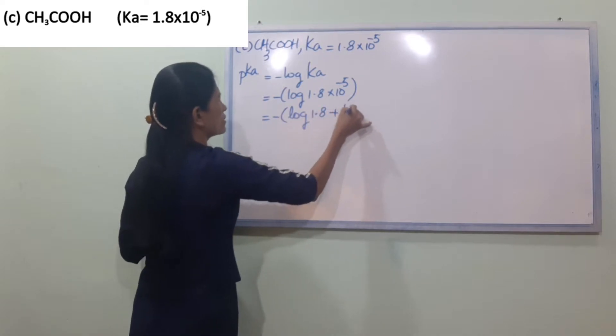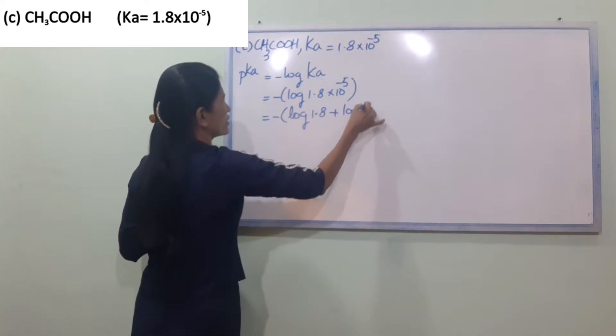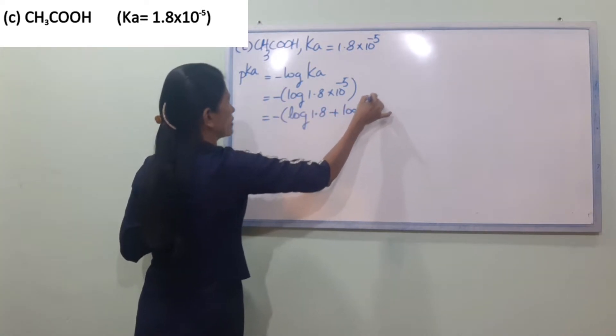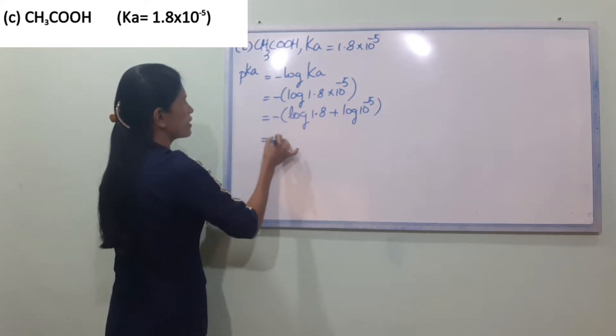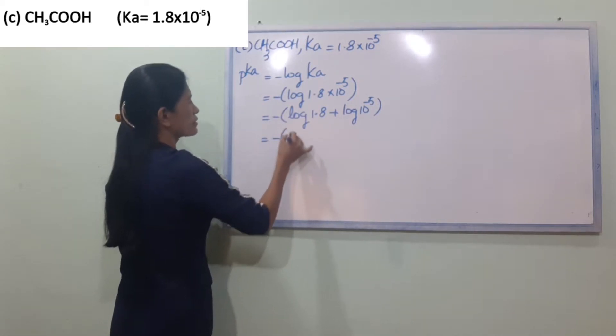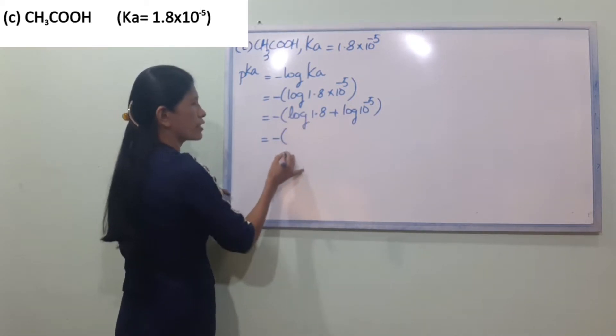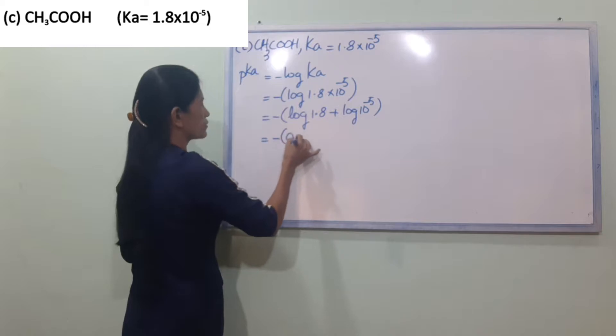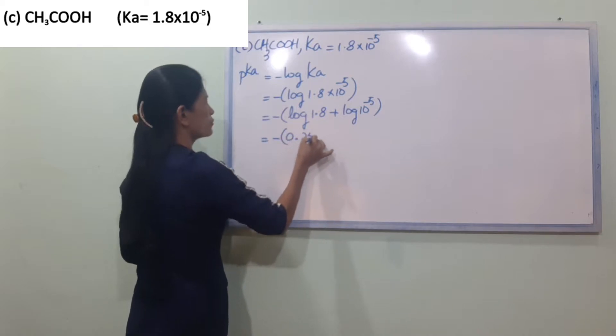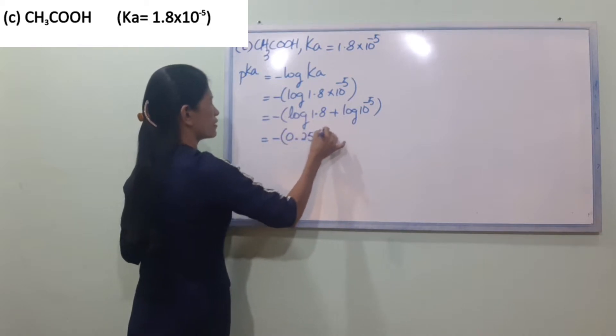This equals minus log 1.8 plus log 10 power minus 5. Minus log 1.8 is equal to 0.2553.